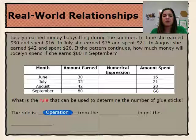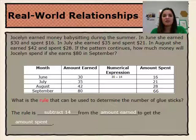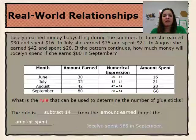The rule is to subtract 14 from the amount earned to get the amount spent. If the pattern continues, how much money will Jocelyn spend if she earns $80 in September? Completing the numerical expression: 30 minus 14 equals 16, 35 minus 14 equals 21, 42 minus 14 equals 28, and 80 minus 14 equals 66. So in September, if she earns $80, she will spend $66.